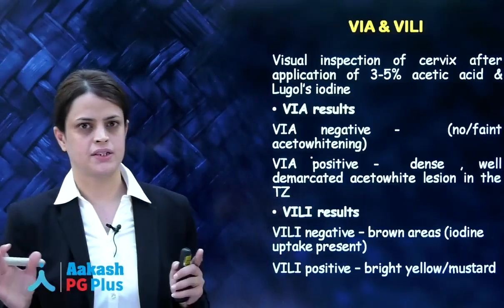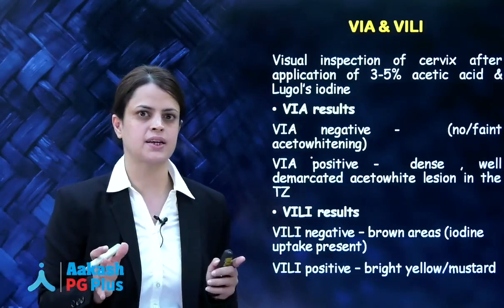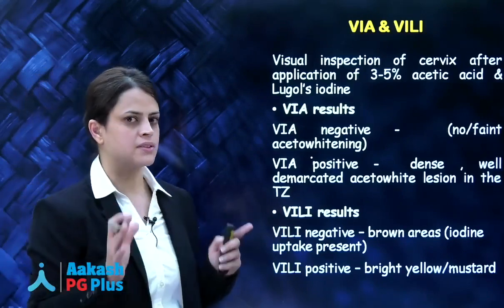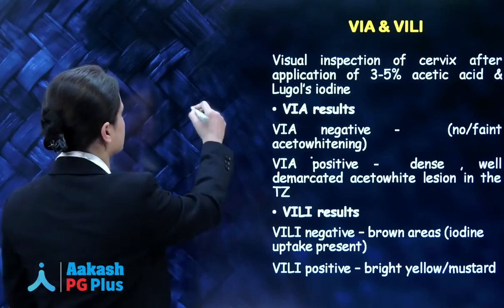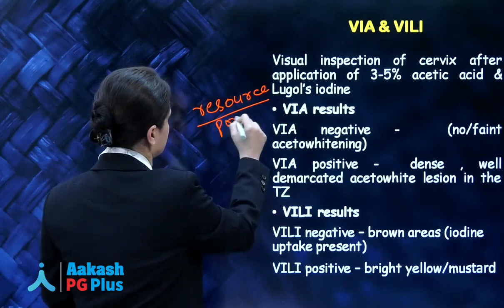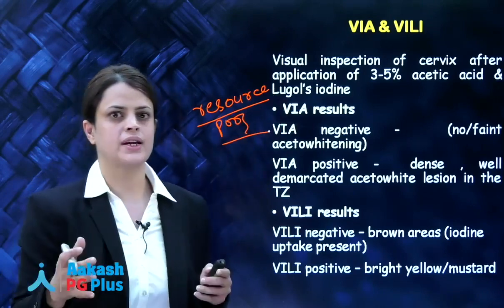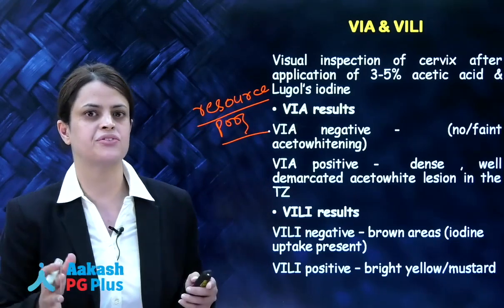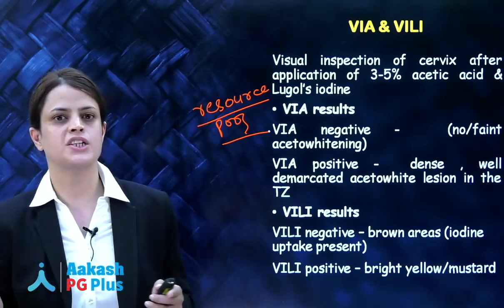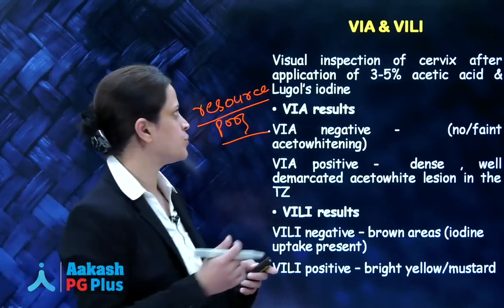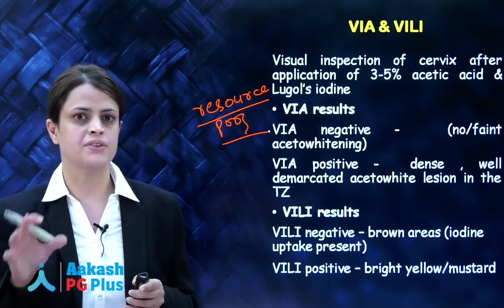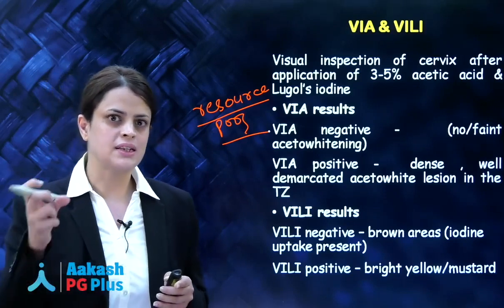VIA and VILI — visual inspection with acetic acid and visual inspection with Lugol's iodine — are the screening tests of choice in a resource-poor setting. For example, when organizing a screening camp in a village or peripheral area where you don't have a laboratory, a cytopathologist, or HPV detection kits, you can perform VIA and VILI. Healthcare workers can be trained to perform these tests and screen out high-risk women.